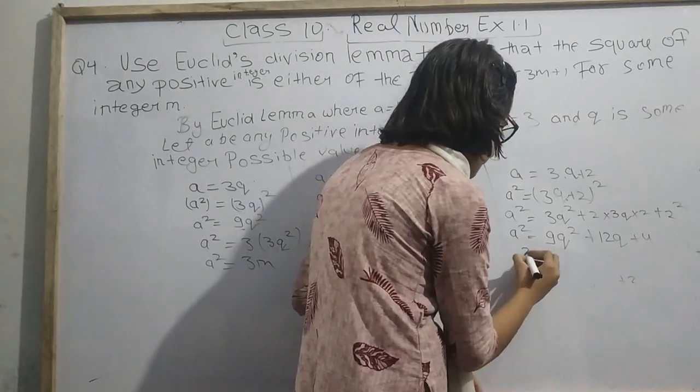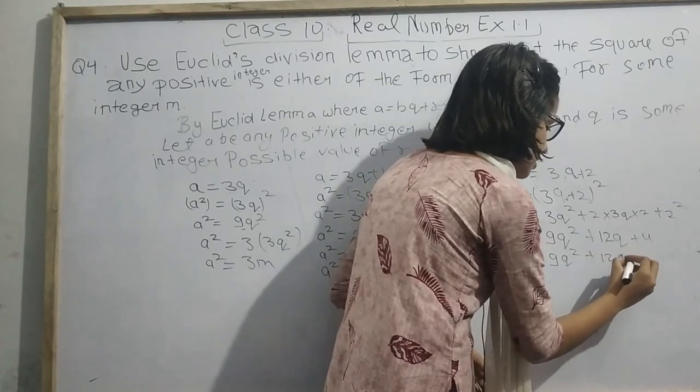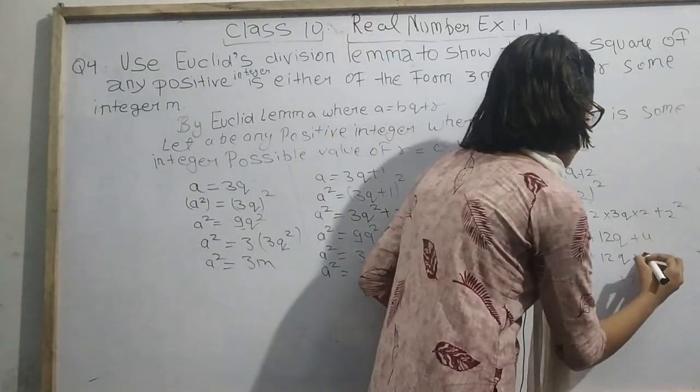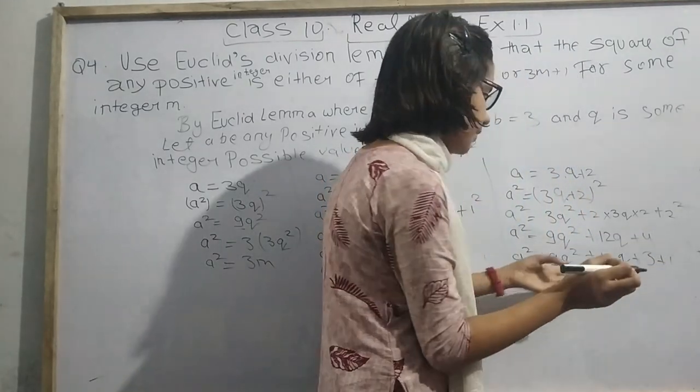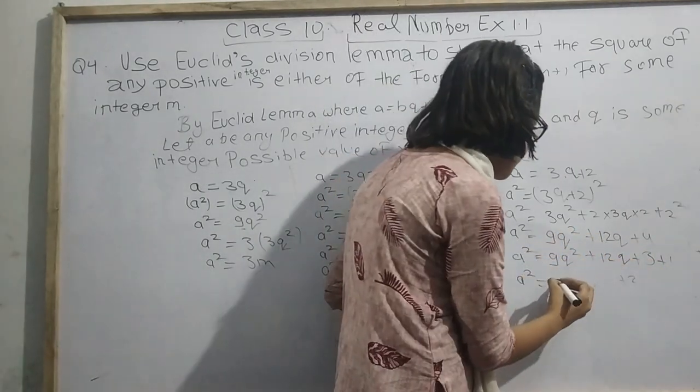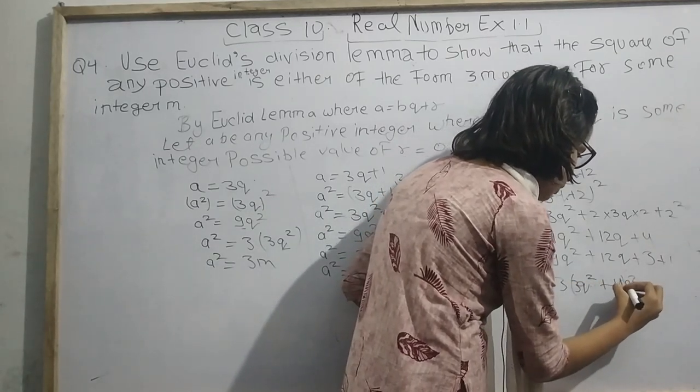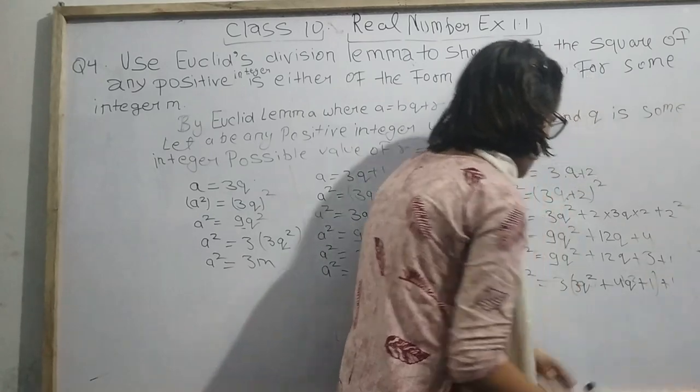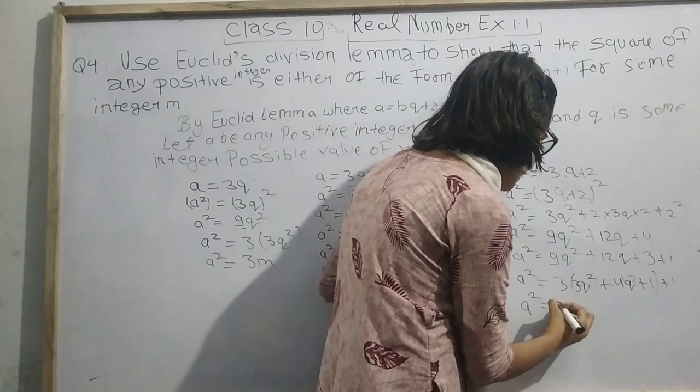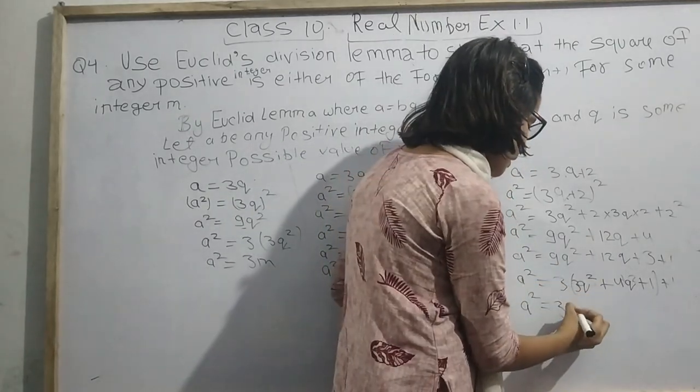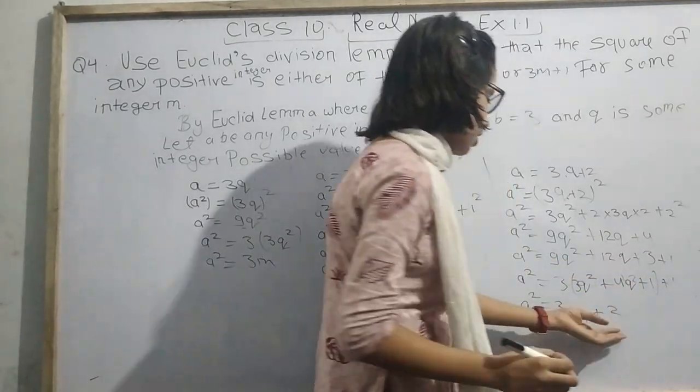We will write 9Q square and 12Q as is. This 4 we can also write as 3 plus 1. We will find a number that divides 9, 12, and 3 exactly. That is 3. So 3 times 3Q square plus 4Q plus 1, and in the end plus 1. We can write that this will be changed as M. This gives us 3M plus 2.